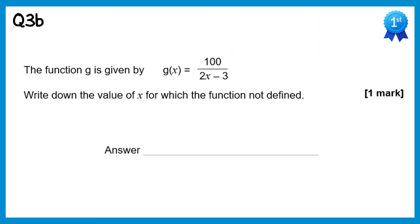In this question we need to find the value of x for which the function is not defined. The function won't be defined if we divide by 0, so we need 2x minus 3 to equal 0. Adding 3 to both sides gives 2x equals 3, and dividing by 2 gives x equals 3 over 2.